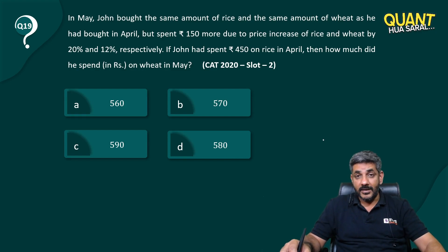but spent 150 rupees more due to price increase of rice and wheat by 20 percent and 12 percent respectively. If John had spent 450 on rice in April, then how much did he spend on wheat in May?